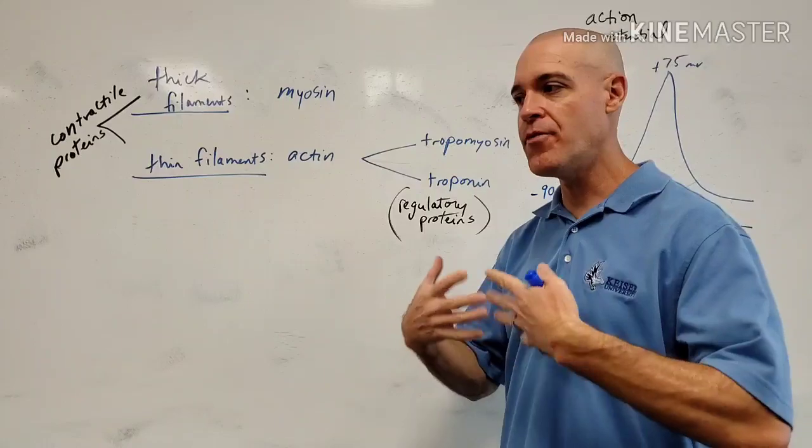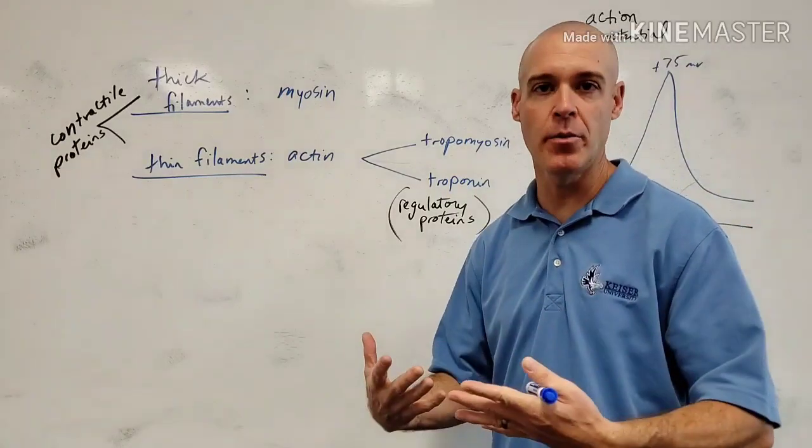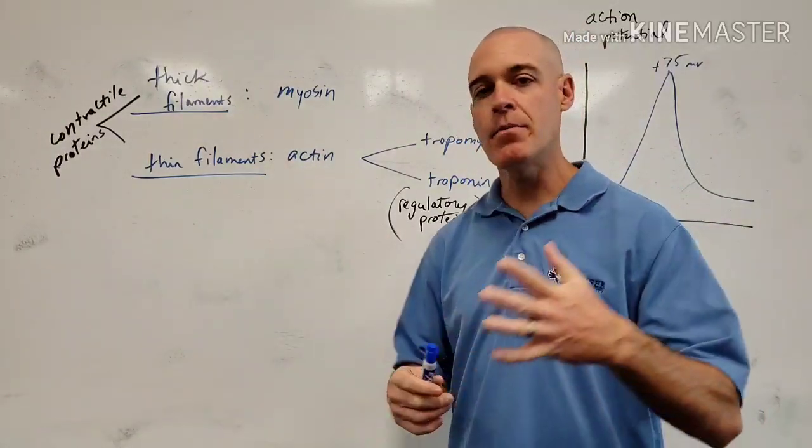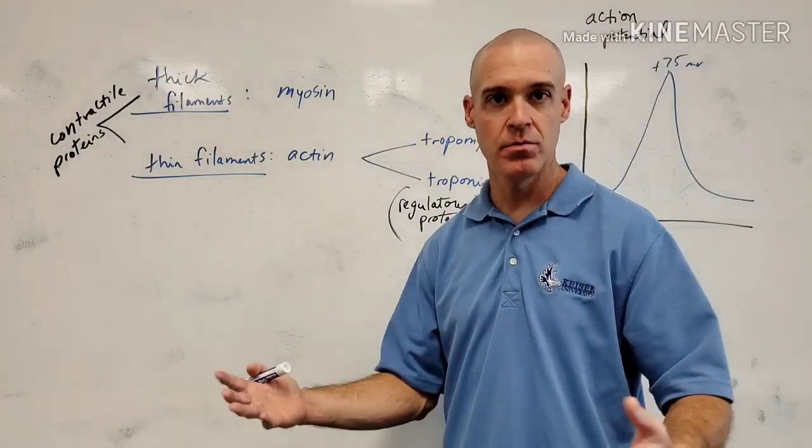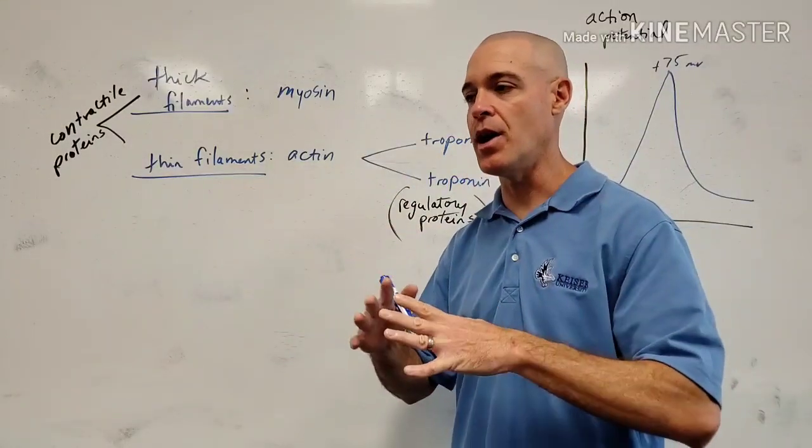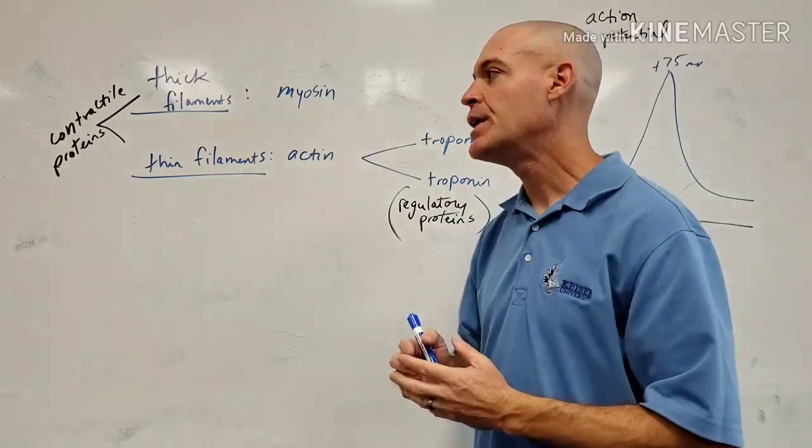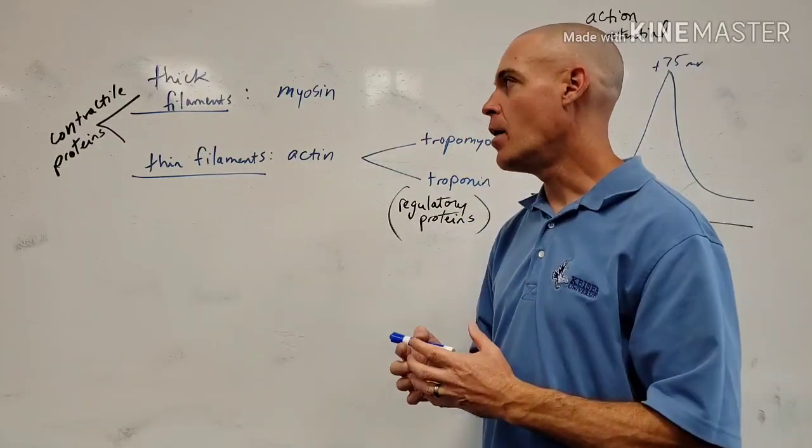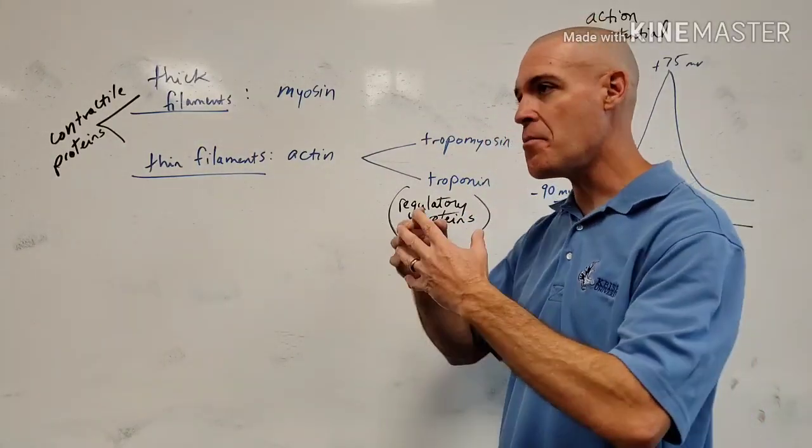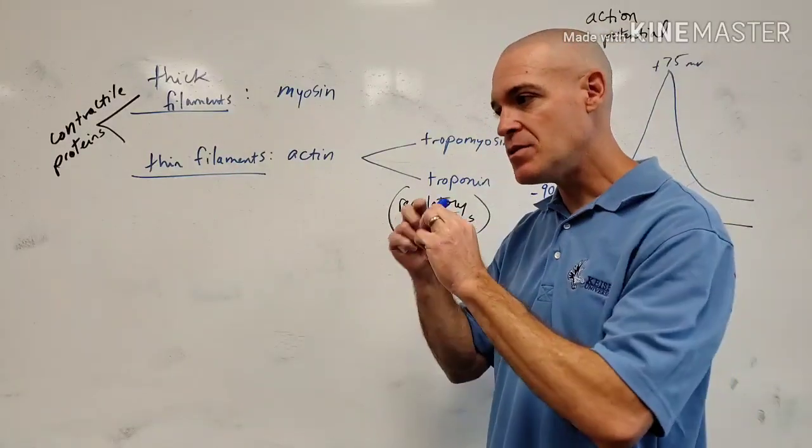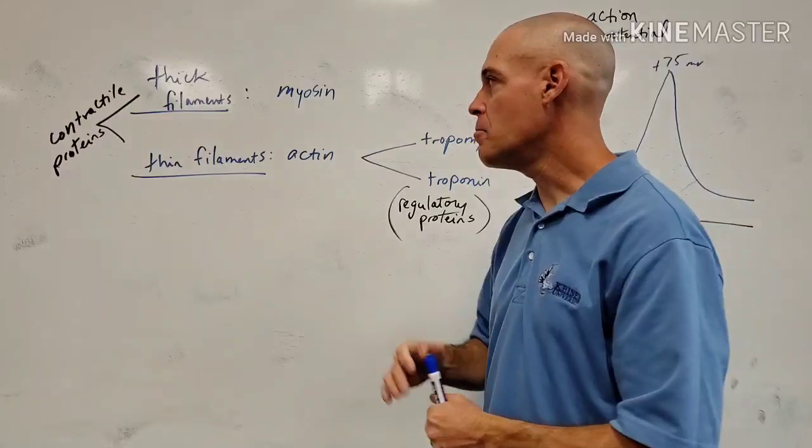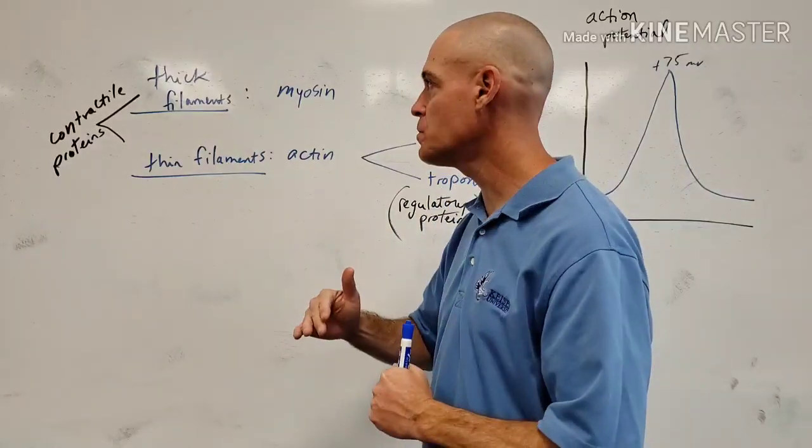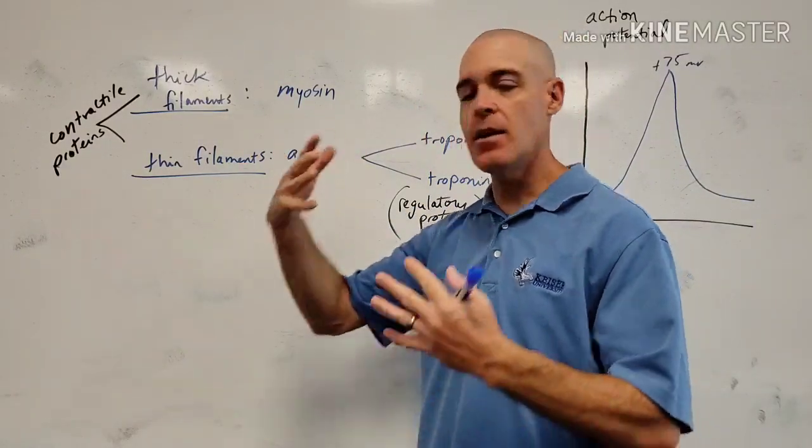Within skeletal muscle, there are some filaments referred to as myofilaments. These are basically the smallest structures within a muscle fiber. Keep in mind a muscle fiber is a type of cell. It has many of the parts of a cell. Of course, the muscle cell is a very specialized cell, so some of the organelles look a little different, and they have a slightly different function. But it is a true cell. So really within the muscle fiber, we have these very small myofilaments. And the two main myofilaments, many of you know this already, is actin and myosin.